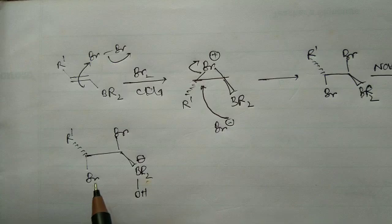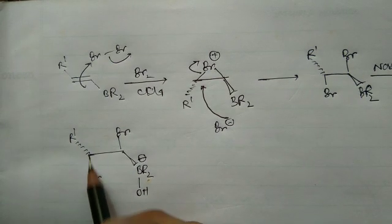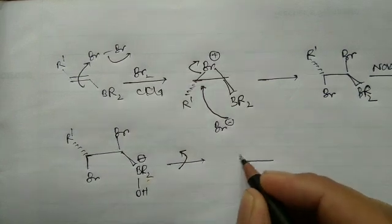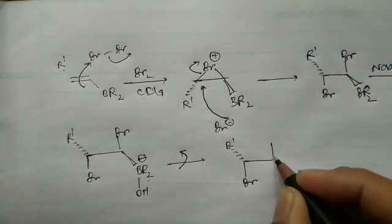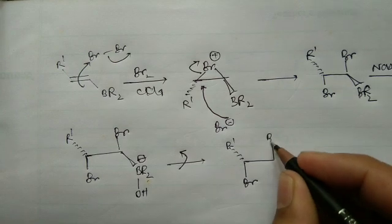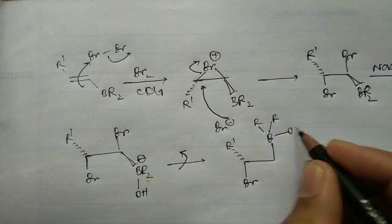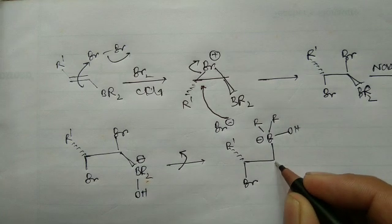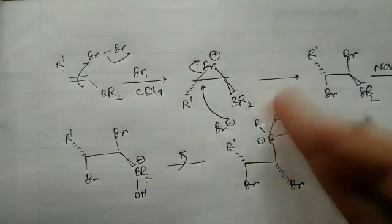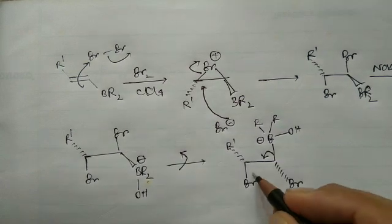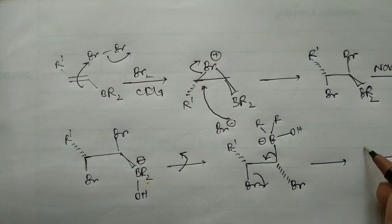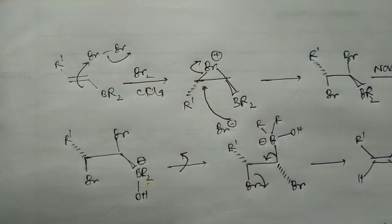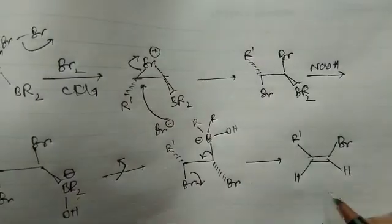An elimination reaction now takes place, requiring anti-periplanarity of the C-Br bond and the C-B bond. Bond rotation occurs to achieve anti-periplanarity: R' stays in place, bromine is positioned, and boron with OH rotates to become anti. After rotation, bromine is below the plane. When elimination occurs, R' and bromine end up on the same side — giving the cis product.